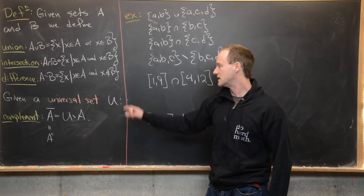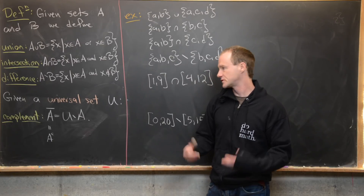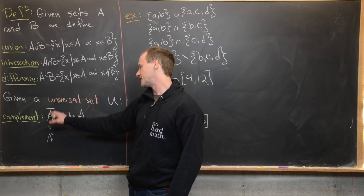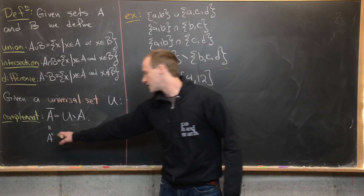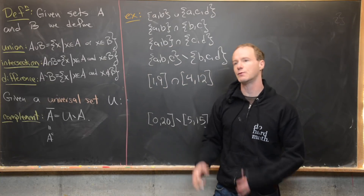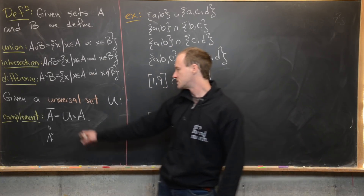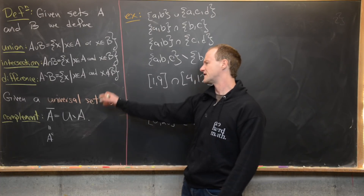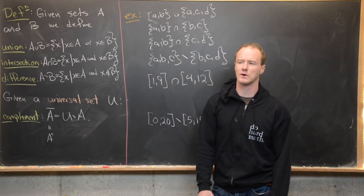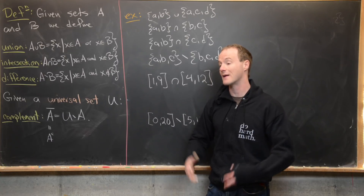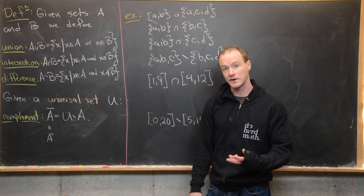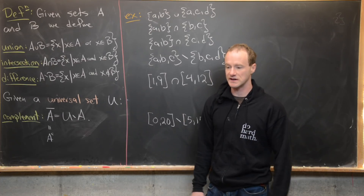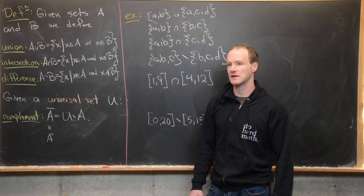The set difference is written A minus B (sometimes with a tilted minus sign depending on the textbook), and equals all x such that x is in A and x is not in B. Finally, the complement requires a universal set and is written with a bar over A or a superscript C, read as 'A complement.' It equals the universal set minus A. Usually the universal set is clear from context, such as the real numbers when working with intervals.